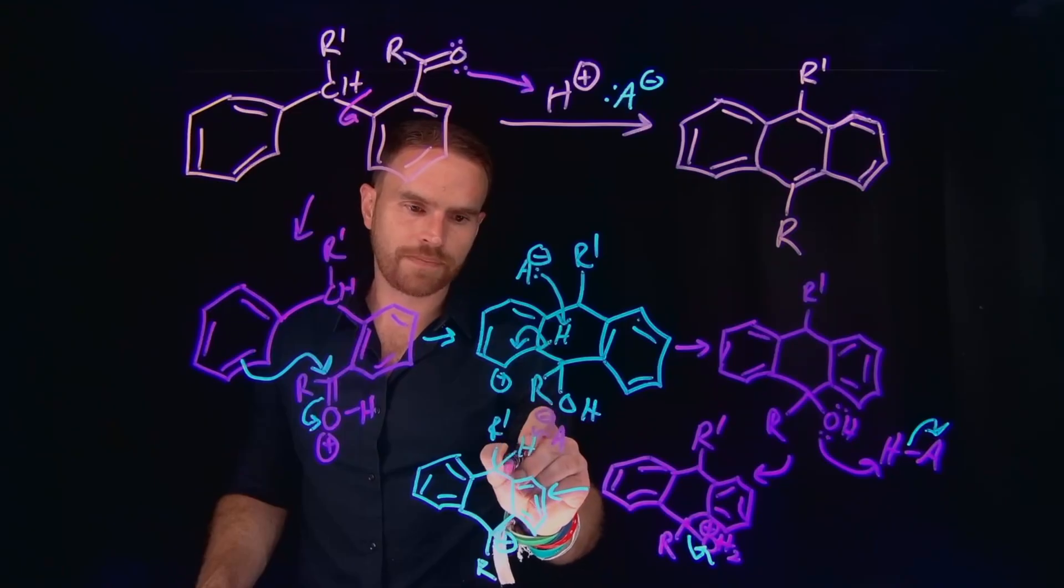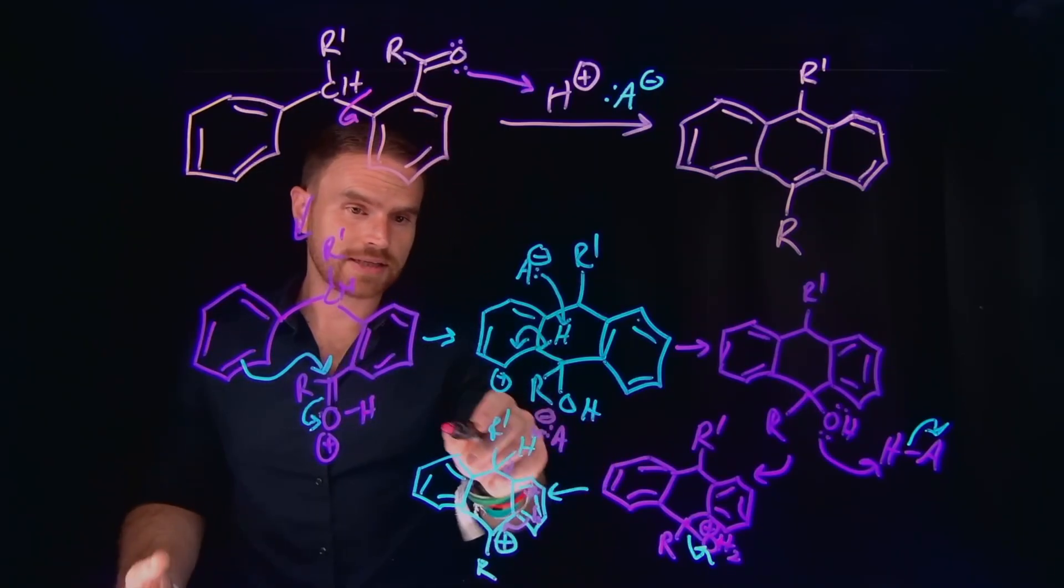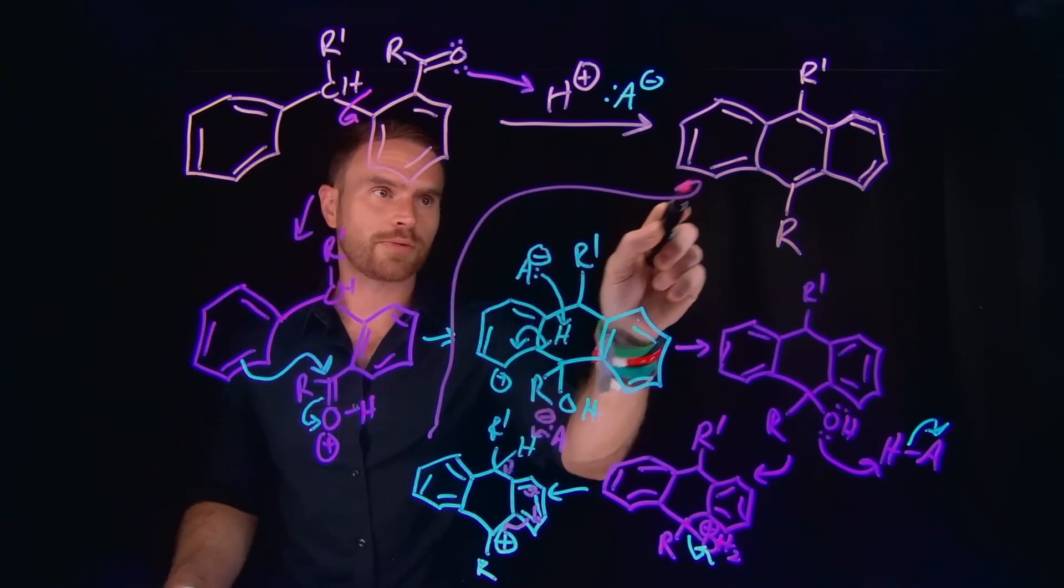these pi electrons will come down. That's actually going to kick these pi electrons over as well. So those will go here. These will come here. And then these pi electrons will actually come over here. And ultimately, that actually gets us to our final step where we generate this anthracene derivative.